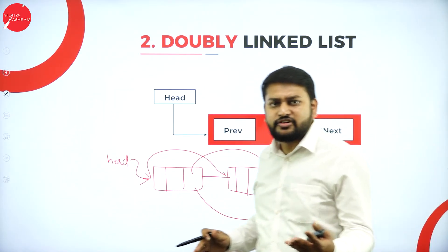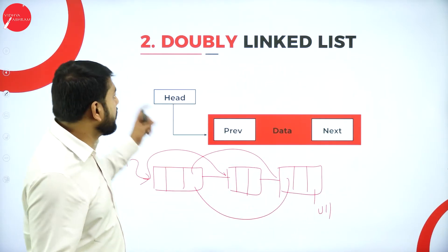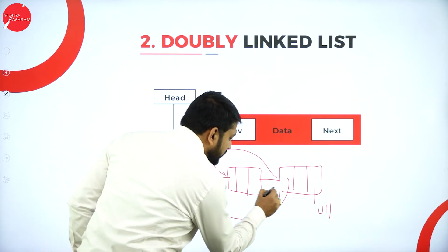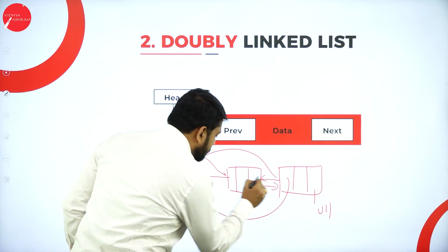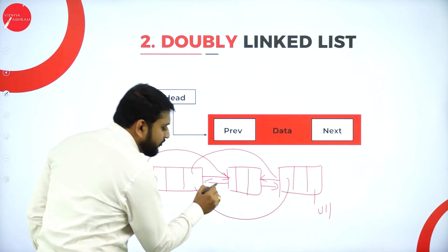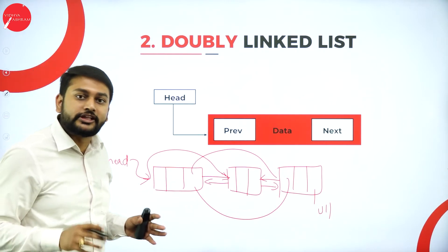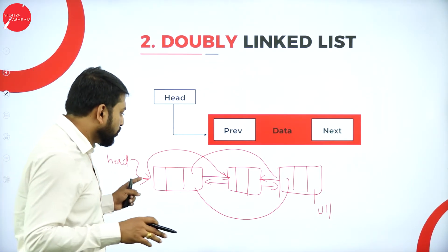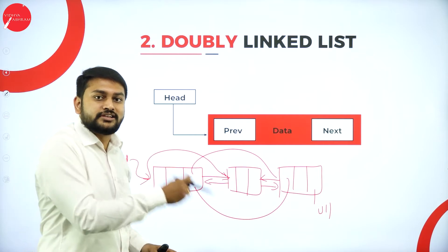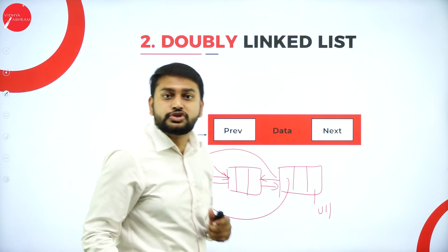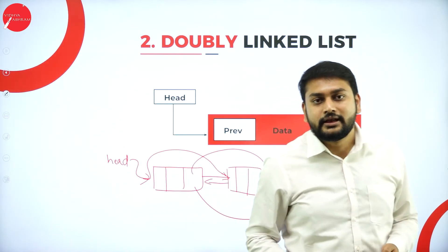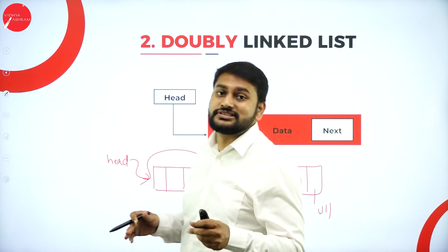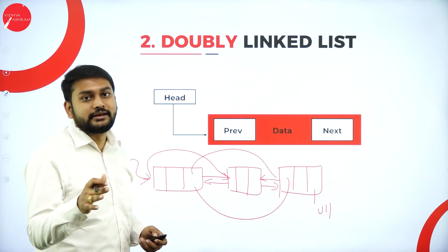For traversal in a doubly linked list, you can traverse in both directions — forward and backward. For searching, you start sequentially and check elements one by one. These are the different operations performed on the doubly linked list.